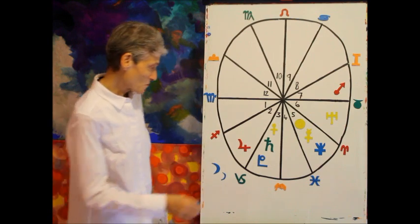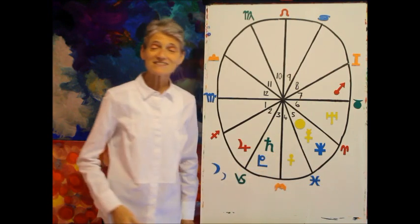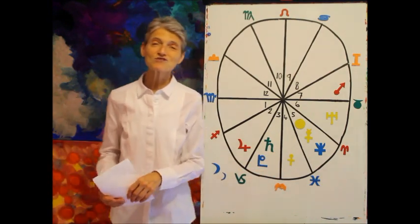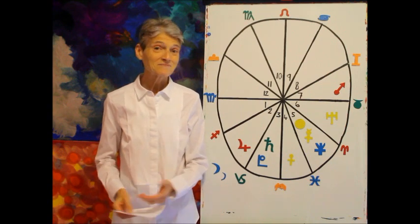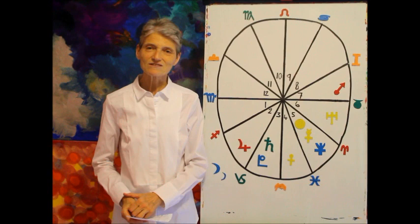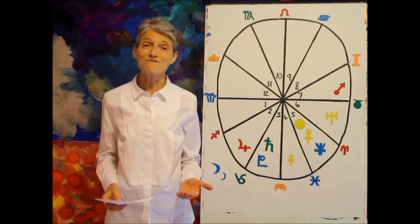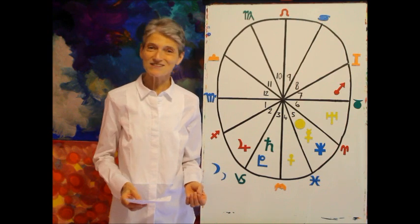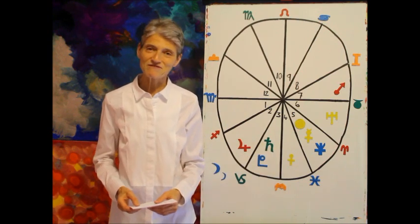On the second, we've got Venus coming into your fourth house. Venus here encourages you to do something nice in your home, to beautify it in some way, to maybe have people round, to do something that just makes your environment softer and more comfortable and more luxurious. There could also be some good news about a family member.